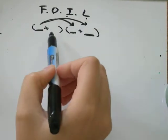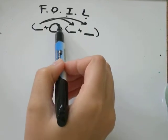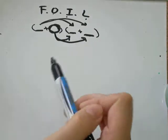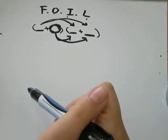The inside is what you do last, so this would be whatever number or letter is here would be the inside, and you do the same thing. You multiply it by everything in the other set of brackets.